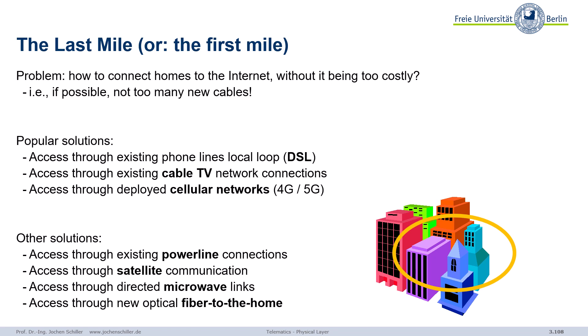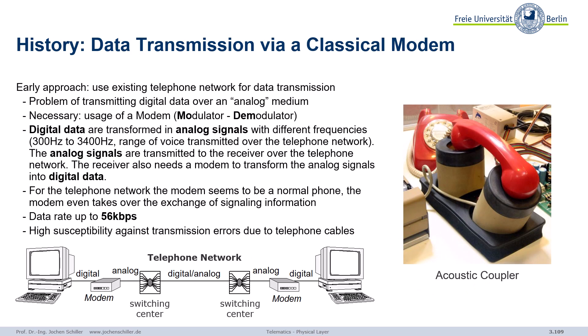How did it all start? The idea was not to replace all the cables — this is a look into history. Acoustic couplers: we want to transmit digital data over classical phone lines, so we modulate our digital data using the spectrum between 300 and 3400 Hz, creating analog signals the telephone network can transmit. The receiver transforms the analog signals back into digital data, and the telephone network simply treats it as a normal phone call. Data rates reached up to 56 kilobit per second, but there were many problems — that's history now.